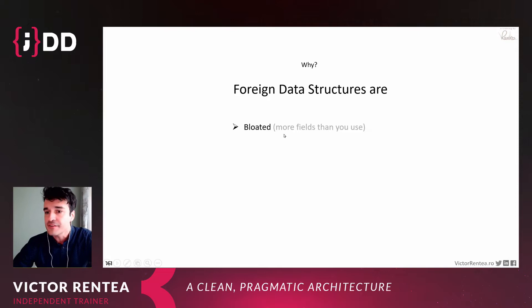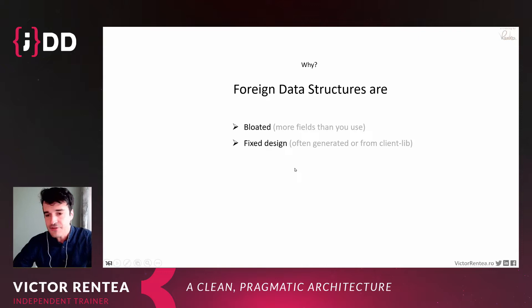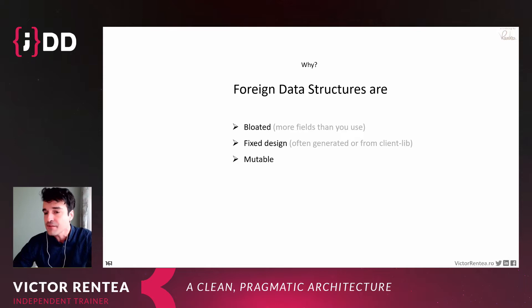DTOs are typically bloated — they have many more fields than we actually need. You'll end up passing a structure with 15 fields to a method that only uses three or four, which harms maintainability and makes it harder to understand what the function really does. These DTOs are typically out of our control — we can't add code to them because they're generated from YAML files or come packaged in a client library. They're also typically immutable, which is bad when implementing complex logic.